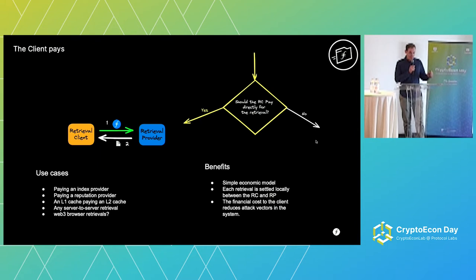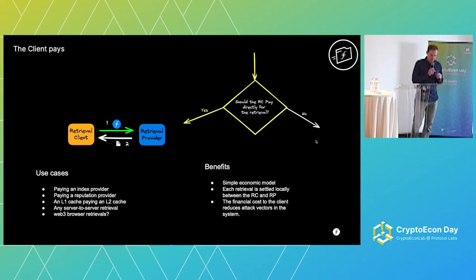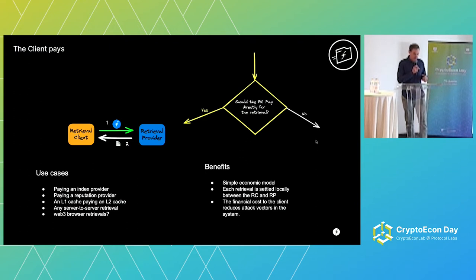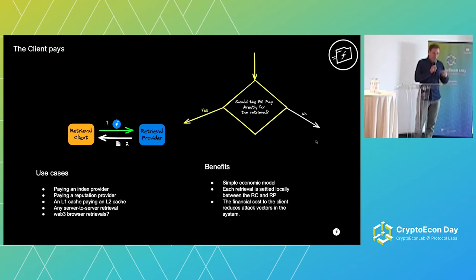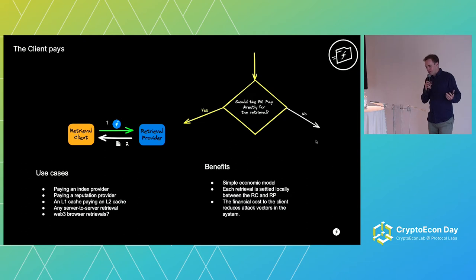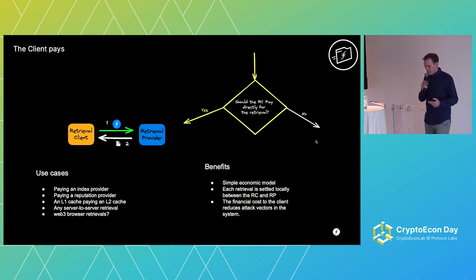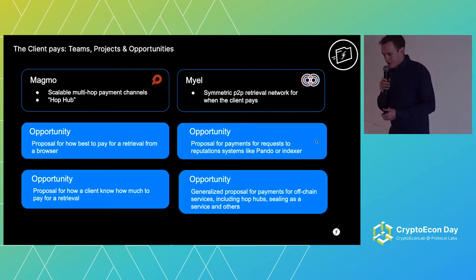The last use case is Web3 browser retrievals, with a question mark — will people be happy to attach a wallet to their browser and start paying micropayments for retrievals? There are benefits to this direct payment model: it's a very simple economic model, each retrieval is settled between the retrieval client and provider without any third-party arbitration. It's exactly how retrievals work from storage providers at the moment via this optimistic fair exchange protocol. Because it's so simple, it reduces attack vectors — there's a cost to retrieving a file, so the client won't do a Sybil attack or DDoS attack on a retrieval provider.